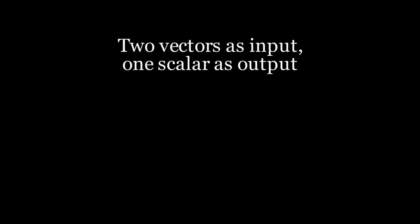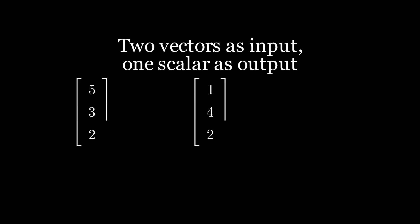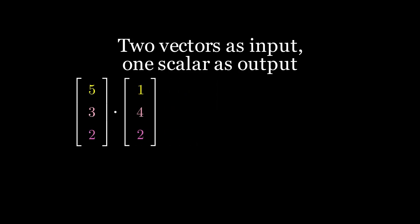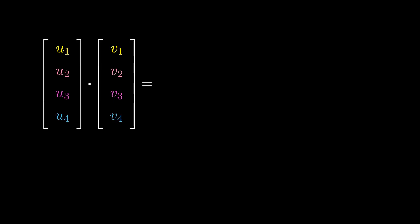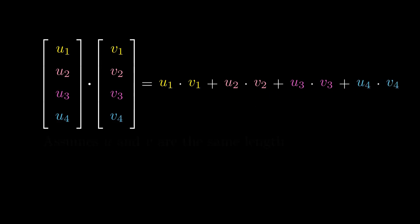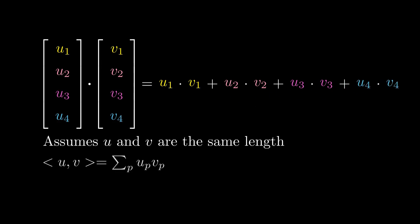A dot product takes two vectors as input and generates a scalar as output. Each element in the first vector is paired with the corresponding element in the second vector, those two elements are multiplied together, and then all of the products are added together, leading to a single scalar output. This works for any length vector — for example, length 4 — and for this to work, the two vectors must be the same length. We can use summation notation with index p to describe this concisely.